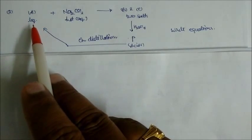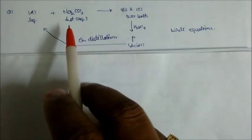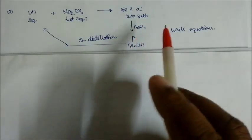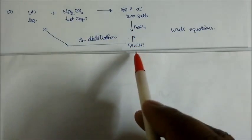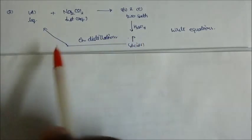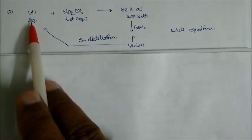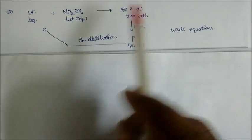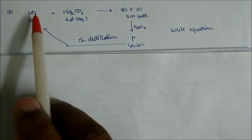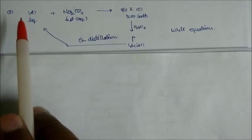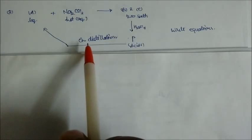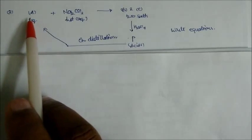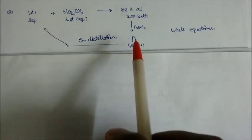A is a liquid compound. On reaction with sodium carbonate in hot aqueous solution we get B and C — two salts. These salts on acidification give one compound P, which is an acid. This acid on distillation gives back liquid A again. Since A is reformed on dehydration, A must be an anhydride — most probably a carboxylic acid anhydride.